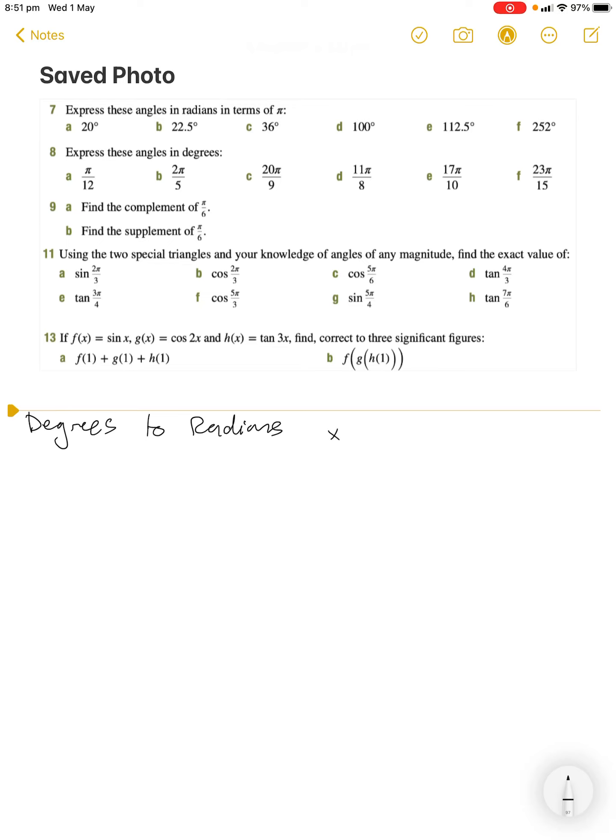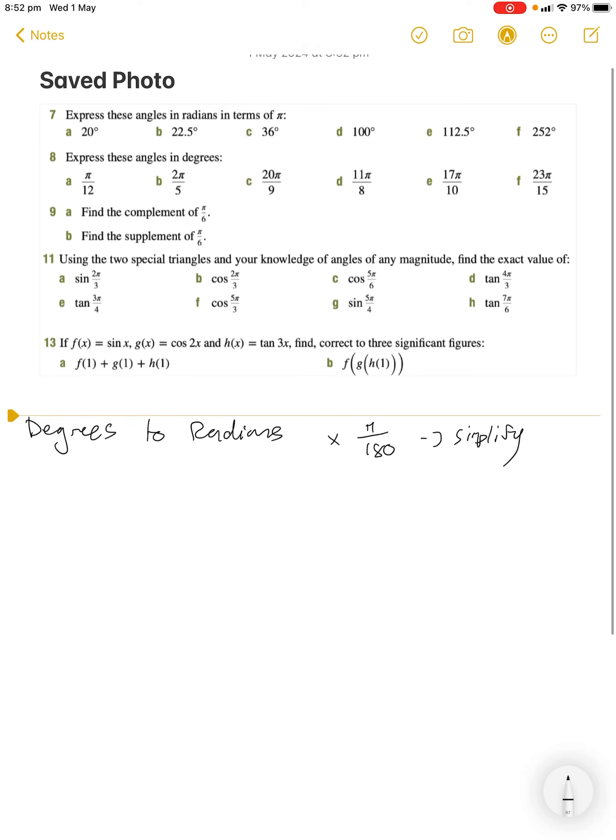What we're going to do is multiply our angle by π over 180, and then you're going to need to simplify after that. So for that first question, express these angles in radians in terms of π.